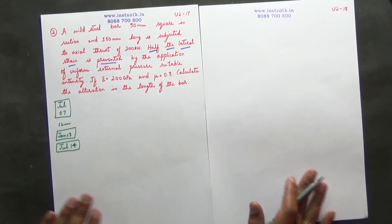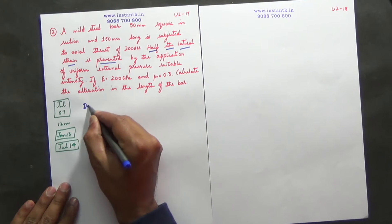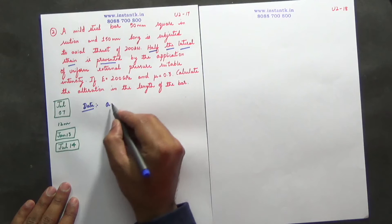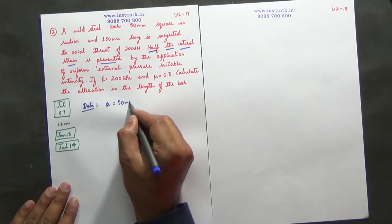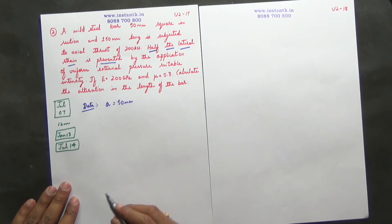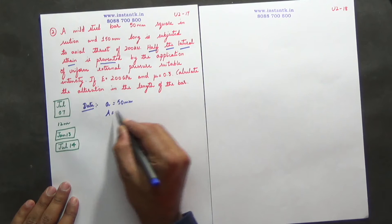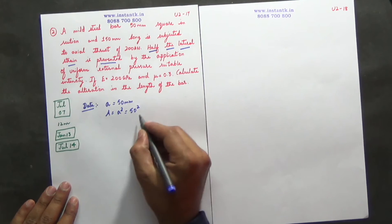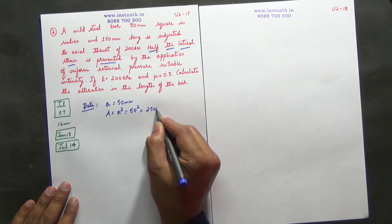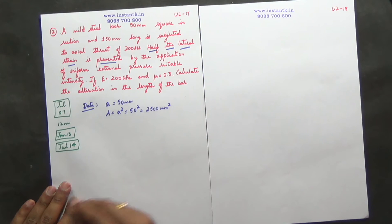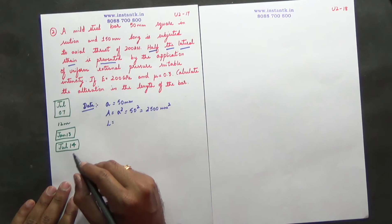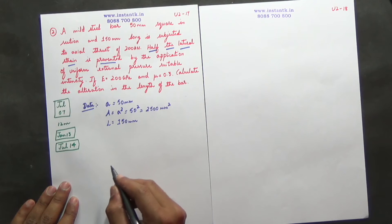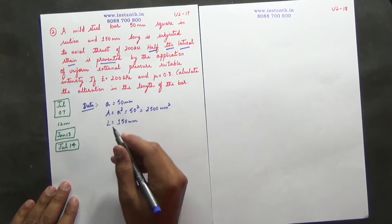So first step is writing the given data. A is equal to 50 mm because it is a square, so area is equal to a squared, so 50 squared which is nothing but 2500 mm squared. L is equal to 150 mm.